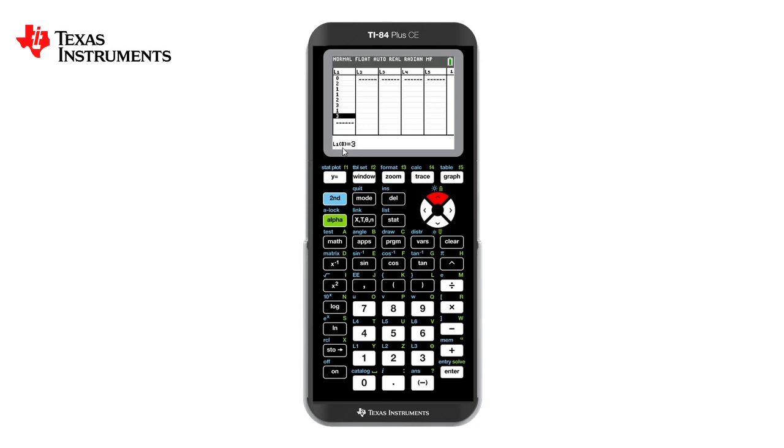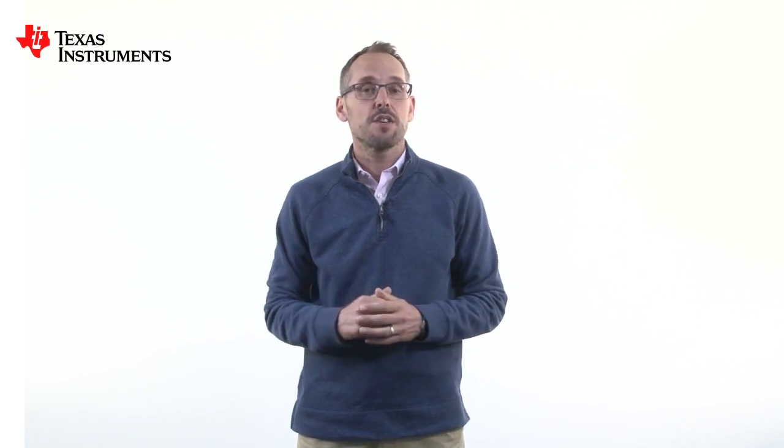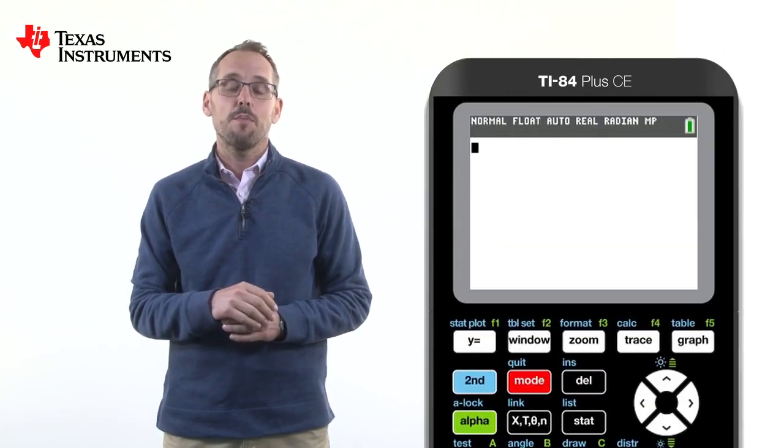Now we can calculate with this information by going to the home screen, which is second mode or quit. We now want to get some statistical calculations on that data. How do we do this? Well, from the home screen, we go back into stat.